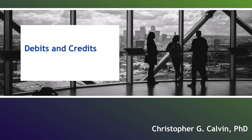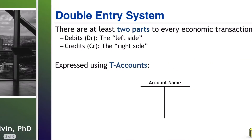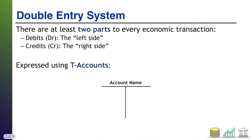Hi everyone. In this video I'm going to introduce you to the concept of debits and credits in accounting. Economic transactions are the things that the accounting information system is trying to collect and process and report on. When we process an economic transaction, what we're really looking for is the double impact of that transaction — the double impact with respect to the accounting equation: A equals L plus SE. Every economic transaction must impact it in at least two ways to keep the equation in balance.